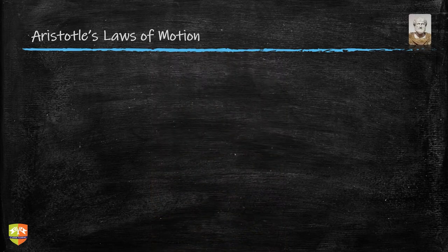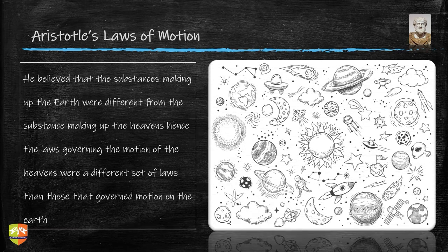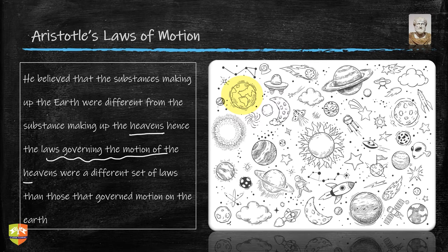What were the elements of Aristotle's laws of motion? He thought that the substances making up the earth were different from the substances making up the heavens. The earth is made up of different material, and other parts of the universe are made up of some other material. Hence, the laws governing motion in the heavens were a different set of laws than those governing motion on earth — different from what is happening on Mars, Venus, the Sun, or any other part of the universe.